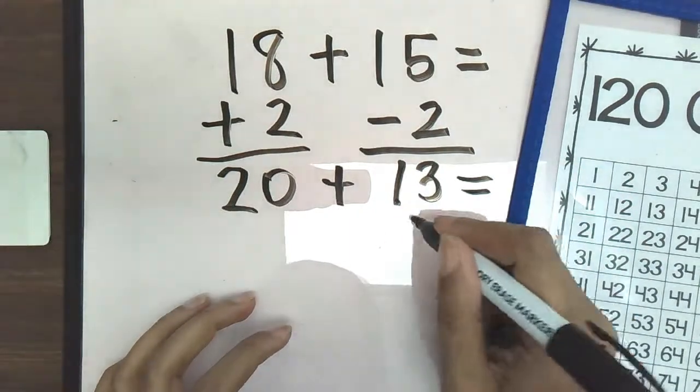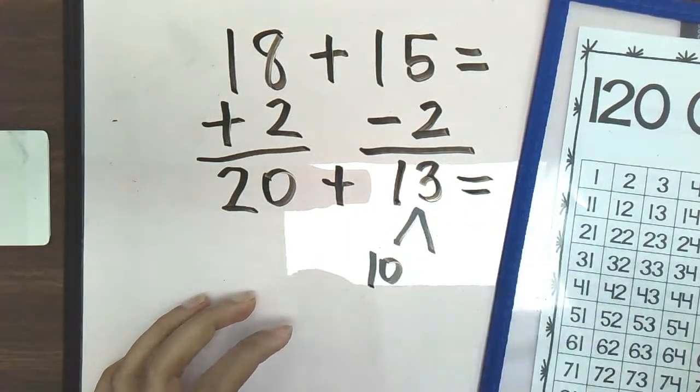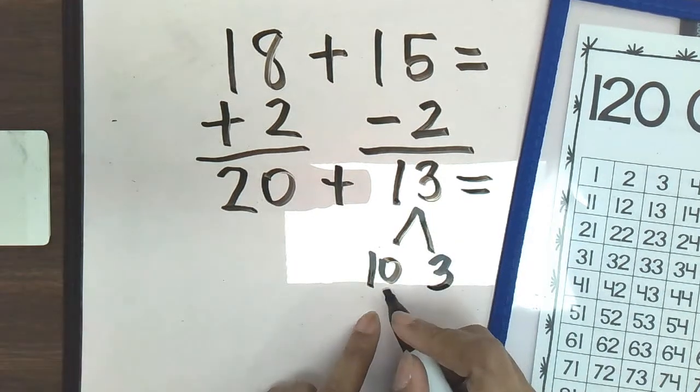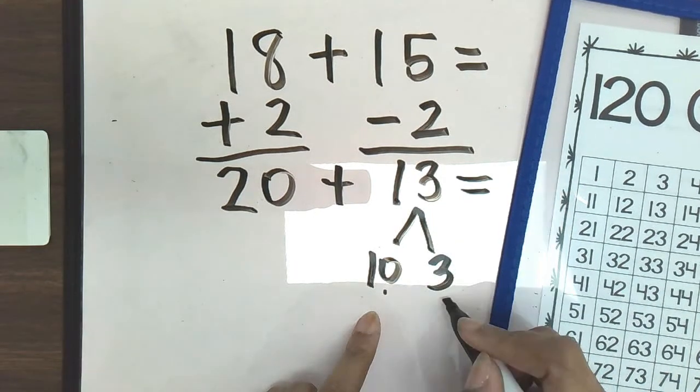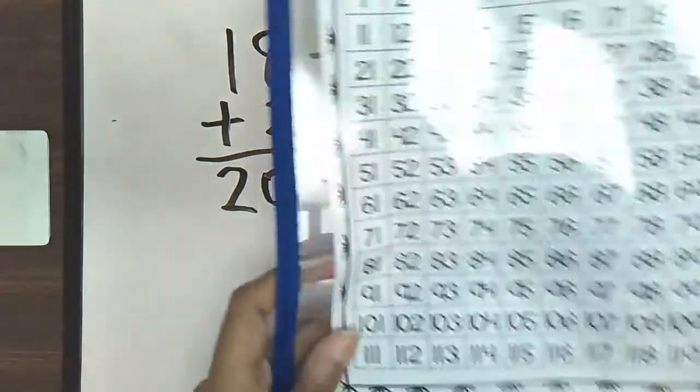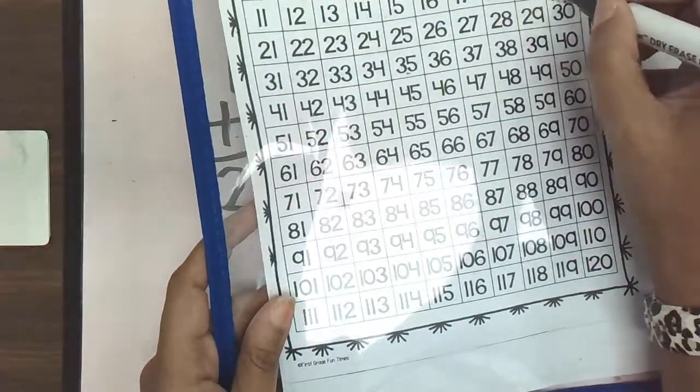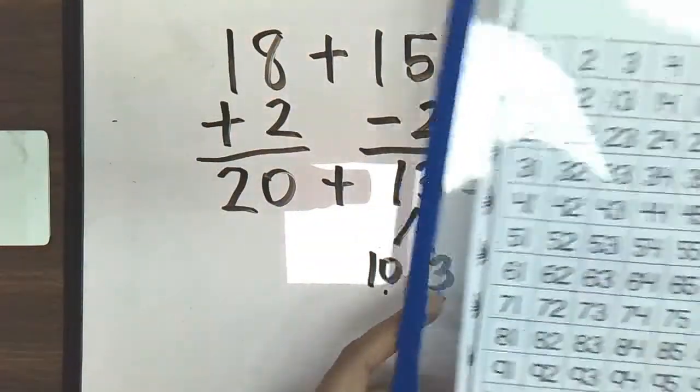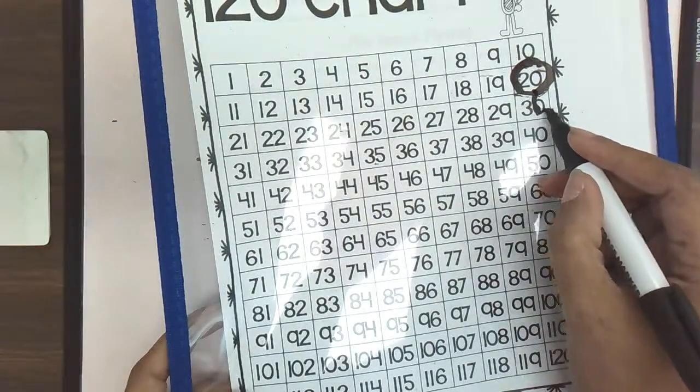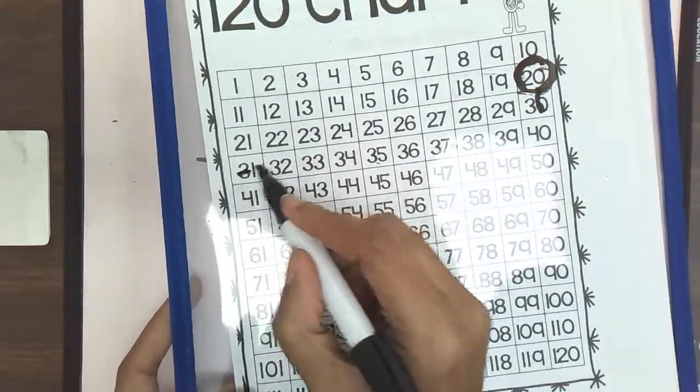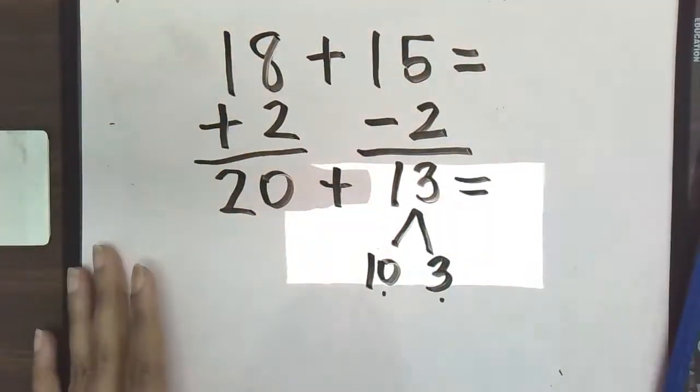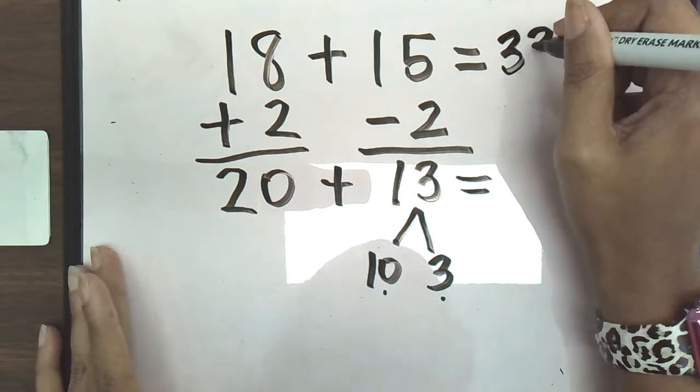So again, we are adding 13. And the number 13, there are 10, I'm sorry, there's 1 ten and three ones. So that lets students know they need to go down 1 ten and over three ones to the right. So if we find 20, we're going to go down 1 ten, which puts us at 30. And then we need to go over three tens. So we run out of room on this last section here. So we're at 30, but we need to add three more. One, two, three. So our answer, our final answer is going to be 33.